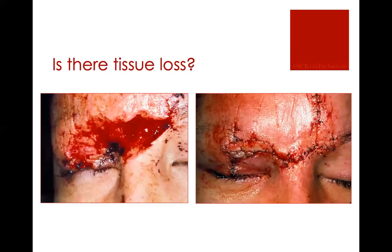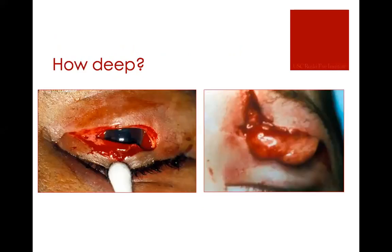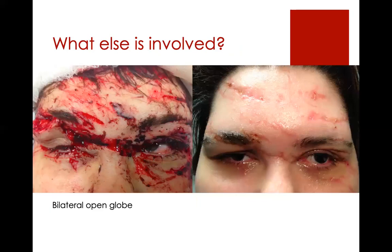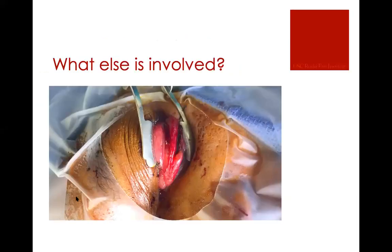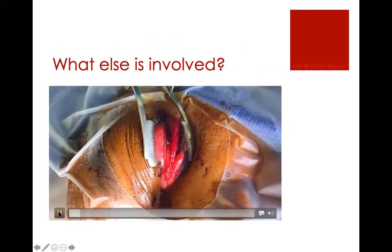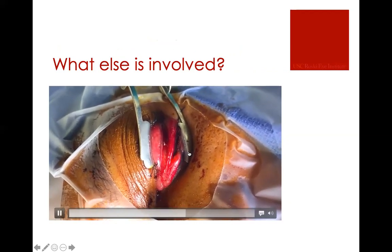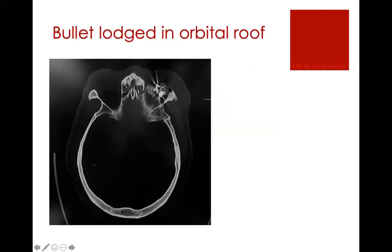Always evaluate whether there is actual tissue loss — usually things are just stretched and pulled away and will come together. Consider how deep things are and what other structures are involved. This patient had a bullet wound that involved the orbital roof and also caused an open globe. We were there removing the ruptured globe, and there was enough communication from the intracranial space that pulsation was transmitted. Neurosurgery said that's fine, just remove the globe.